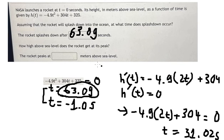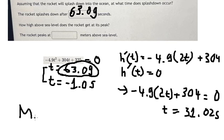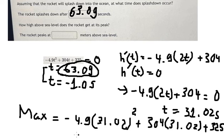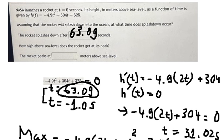After you got this, we put it back into this equation to find the maximum. That is negative 4.9 multiplied by 31.02 to the power of 2, plus 304 times 31.02, plus 325. And we have the final answer: 5040.1 meters. This is the end. Thank you for watching.